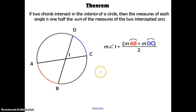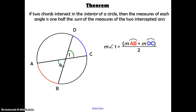Here is our first theorem for when they intersect inside the circle. It says if two chords intersect in the interior of a circle, then the measure of each angle is one half the sum of the measures of the two intercepted arcs. So the measure of angle one — which equals the vertical angle — is found by adding the blue arc and the red arc together, then dividing by two to give you the measure of each of those angles.